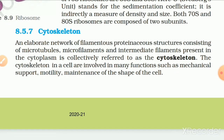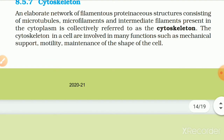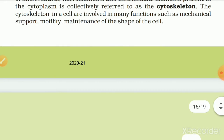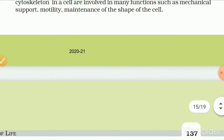8.5.7 Cytoskeleton. An elaborate network of filamentous proteinaceous structures — consisting of microtubules, microfilaments and intermediate filaments — present in the cytoplasm is collectively referred to as the cytoskeleton. The cytoskeleton in the cell is involved in many functions such as mechanical support, motility, and maintenance of the shape of the cell.